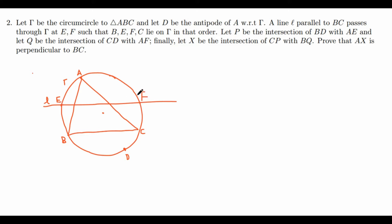B, E, C, F lie in this order. Now we take P to be the intersection of BD with AE. So AE continues on, BD continues on, intersect right here.